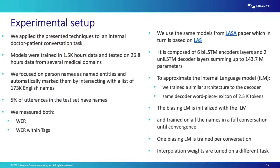We applied the contextual density ratio technique to an internal doctor-to-patient conversation task. Models were trained on 1,500 hours of conversation and tested on 27 hours of data from several medical domains. We focused on person names as the named entities, automatically marked by intersecting transcriptions with a list of 173,000 English names. 5% of utterances in the test set contain names. We measured both overall word error rate and word error rate within named entity tags. Models used were based on the Listen, Attend and Spell architecture with six bidirectional LSTM encoder layers and two unidirectional LSTM decoder layers — totaling 144 million parameters.